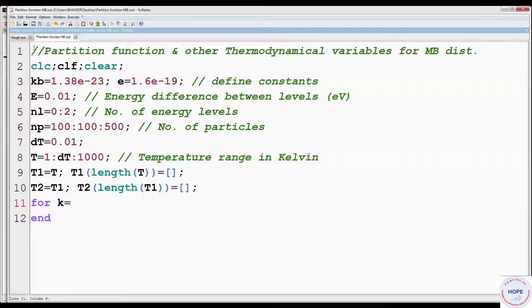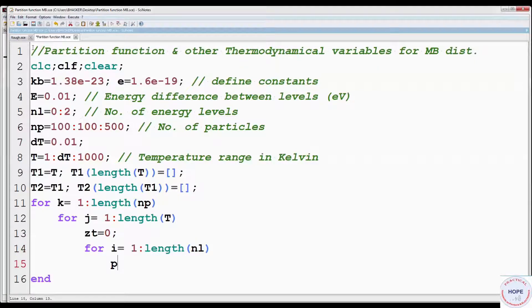First define a for loop that will run from 1 to length of NP, that is number of particles. Then define another for loop J that will run from 1 to length of temperature. Set ZT equal to 0. Define a third loop for I equal to 1 to length of NL, that is number of energy levels.